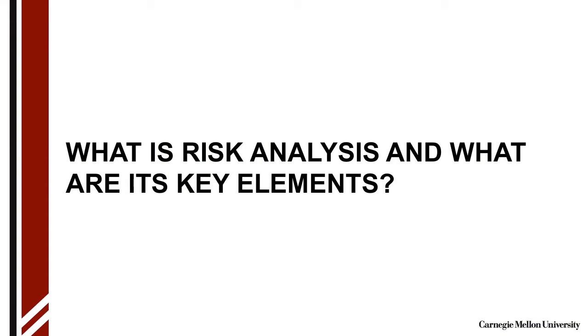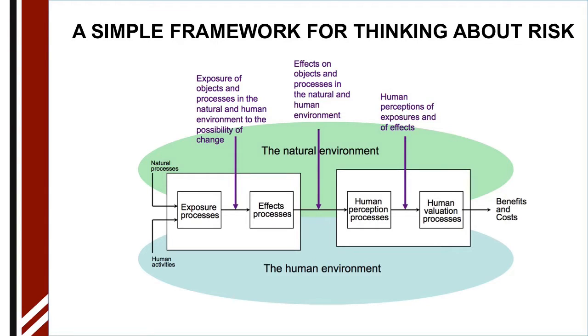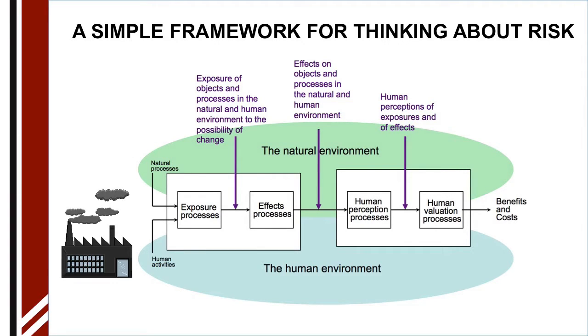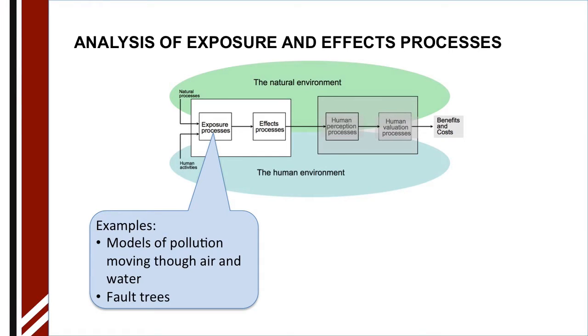And so what is risk analysis and what are its key elements? Well, to answer that question, I have always found it useful to use a diagram. Rather than using the abstract, let's talk concretely. For example, this human activity might be a power plant that's emitting air pollution. Exposure processes would involve things like modeling the pollution's movement through the air. If it's a discrete event, like an accident, I could use strategies called fault trees.